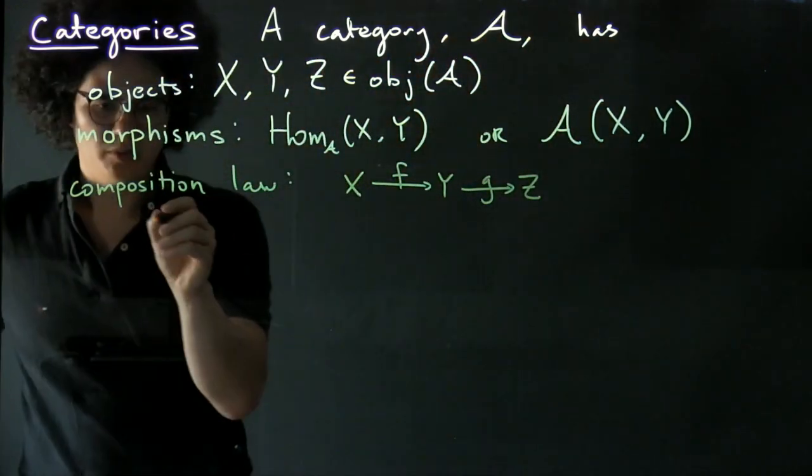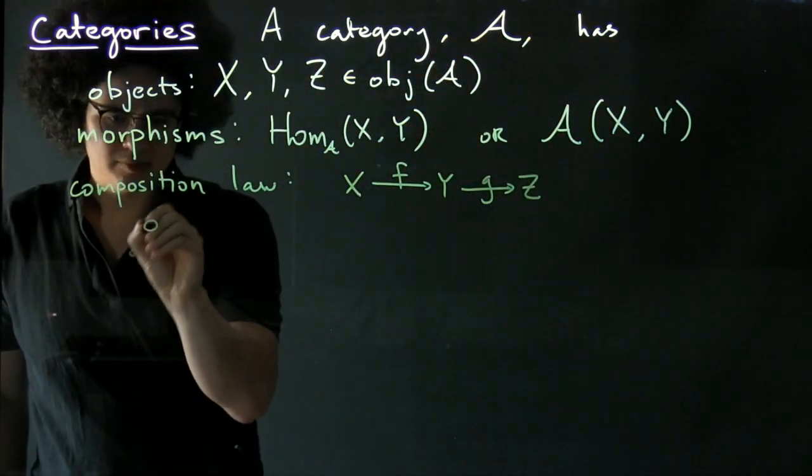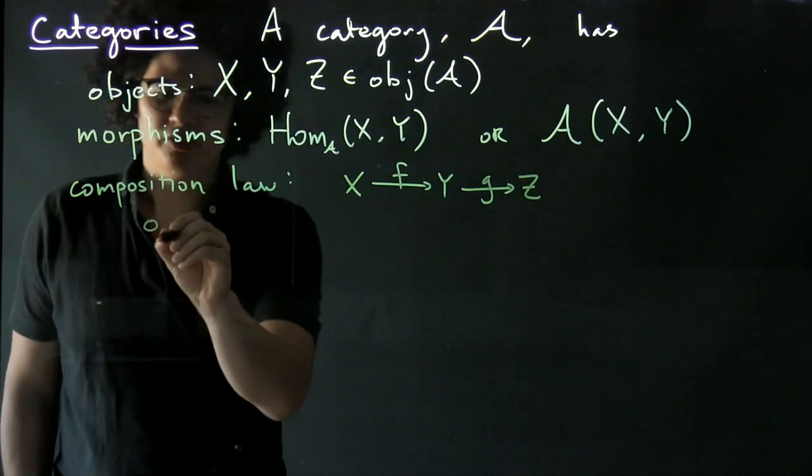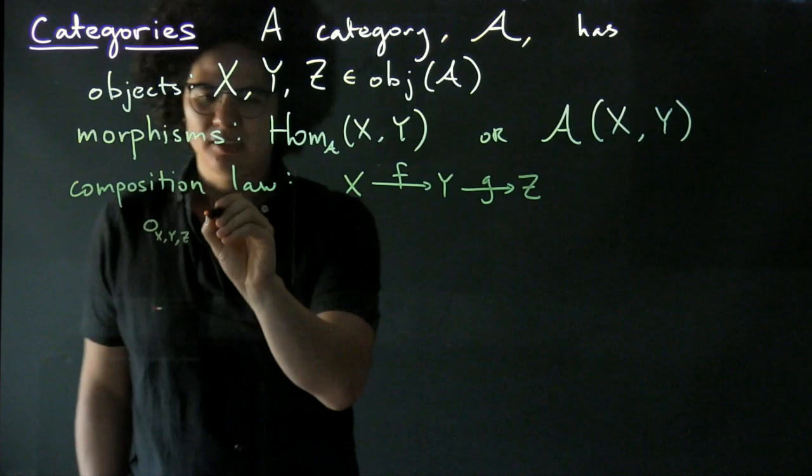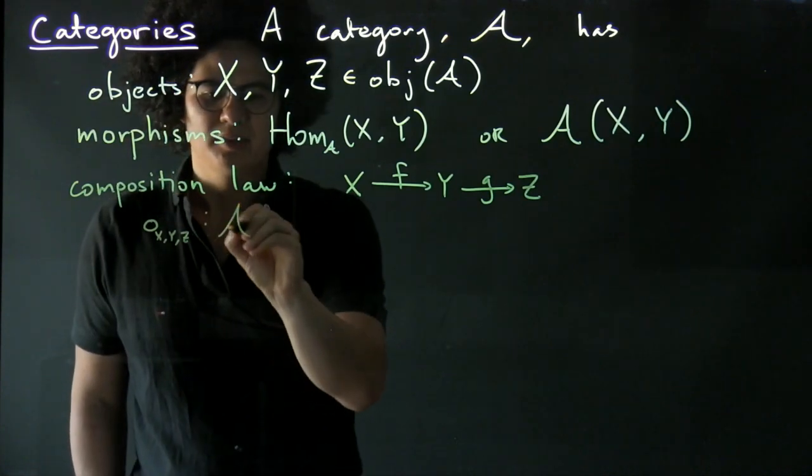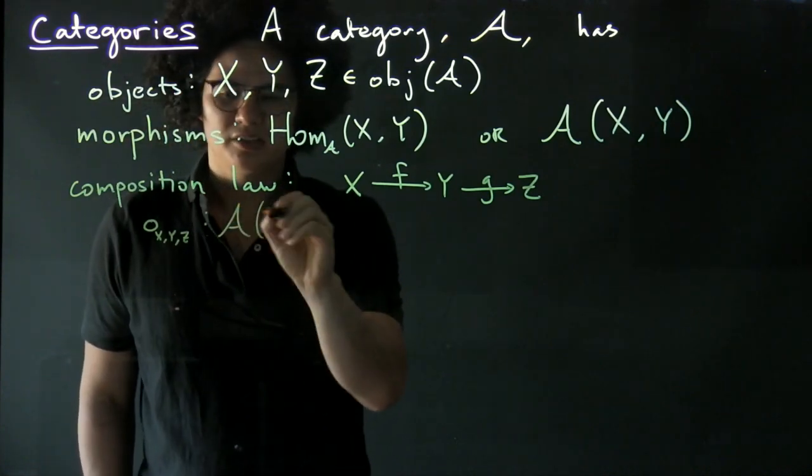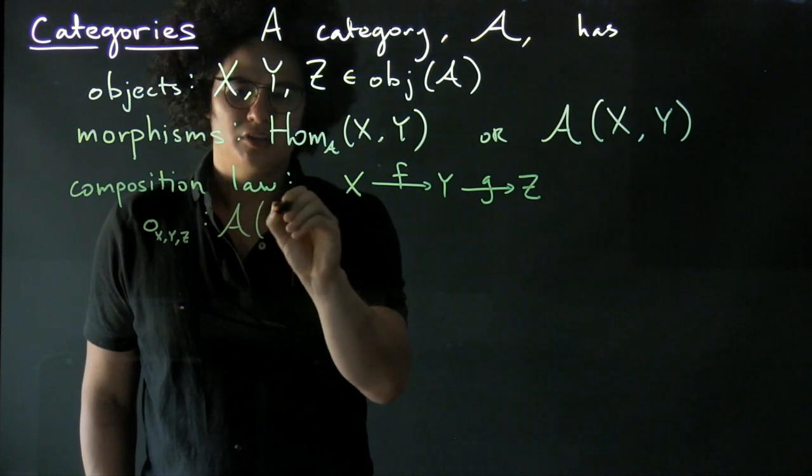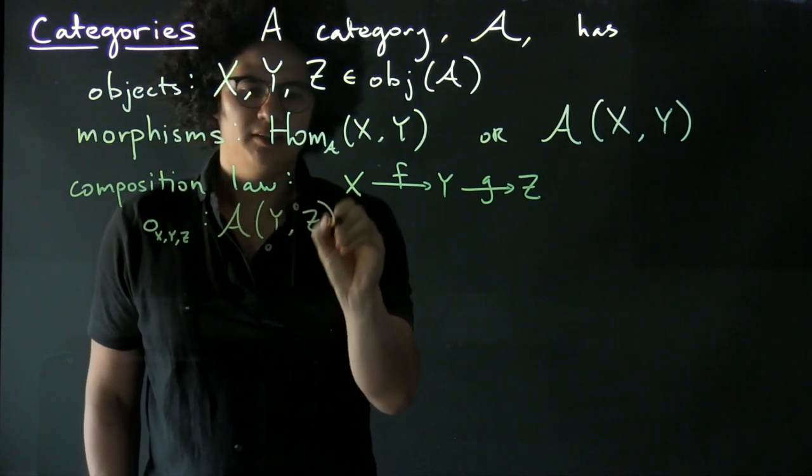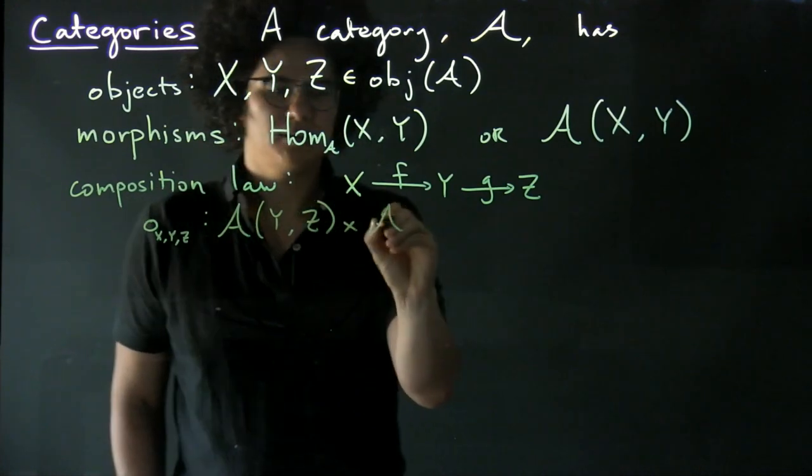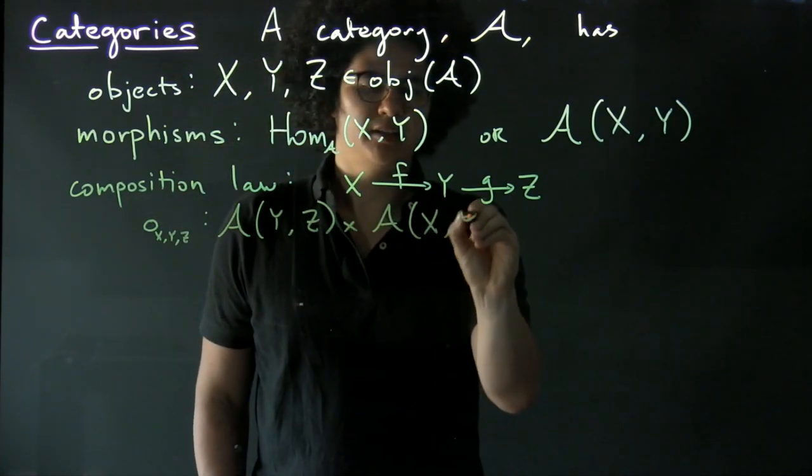So the composition law is a function for each triple of objects, say X, Y, Z, going from the Cartesian product of the Homsets from Y to Z and X to Y.